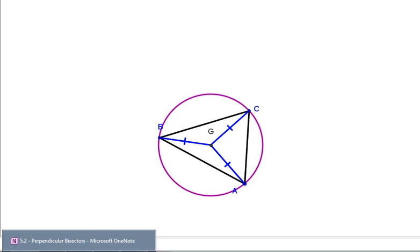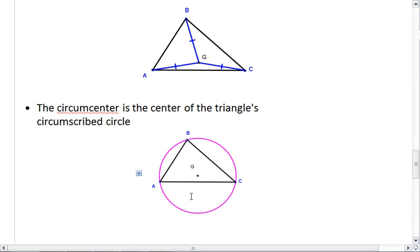This circle is called the circumscribed circle. And that's because it's on the outside of the triangle, but the triangle touches at all three of its vertices.